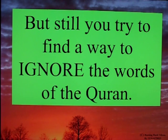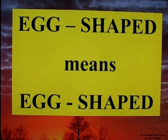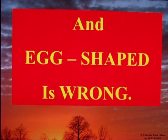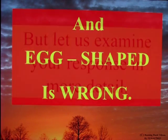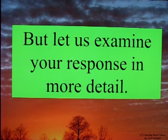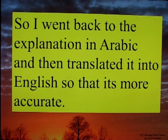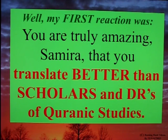But still you try to find a way to ignore the words of the Quran. Egg-shaped means egg-shaped, and egg-shaped is wrong. But let us examine your response in more detail. So I went back to the explanation in Arabic and then translated it into English so that it's more accurate. Well, my first reaction was: you are truly amazing, Samira, that you translate better than scholars and doctors of Quranic studies.